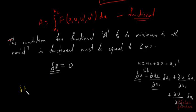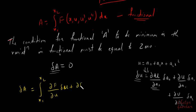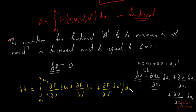Similarly, the variation of the functional A can be written as: δA = integral from x1 to x2 of [∂f/∂u · δu + ∂f/∂u' · δu' + ∂f/∂u'' · δu''] dx, and this must be equal to zero.